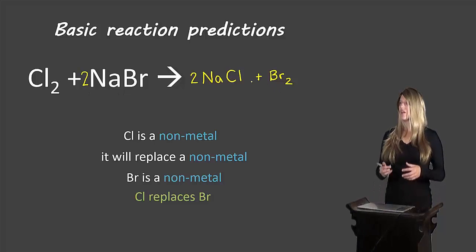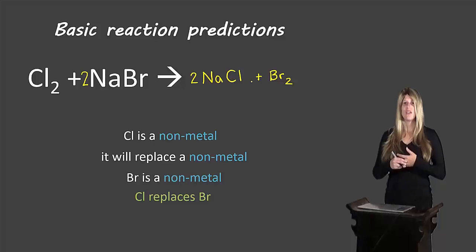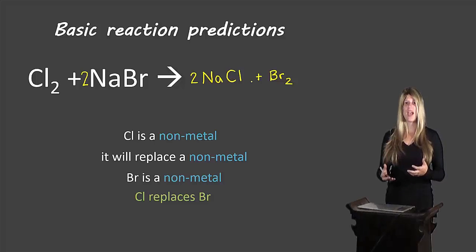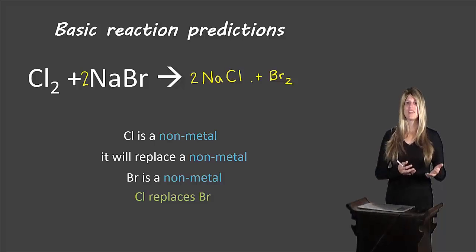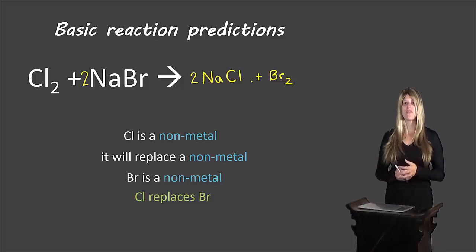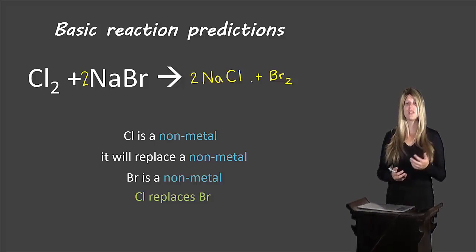These two reactions are simplified versions of how we can predict a single displacement reaction. There are actually some very specific rules about the reactivity of different elements and which ones can take the place of others. For this course, when I give you half the reaction, it's always going to be a reaction that will actually work. However, when you take chemistry in later years, you'll sometimes be given reactions that won't work and you'll need to identify that. If you're interested in learning that ahead of time, I've put up a video on predicting single displacement reactions.